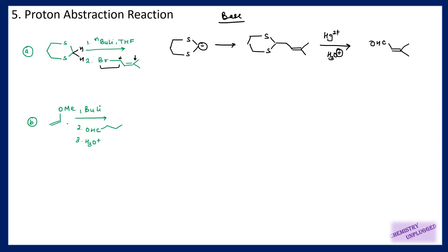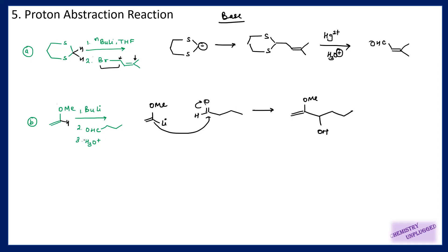Next we have an alpha-methoxy vinyl compound — this is vinyl with a methoxy group at the alpha position. We have one proton attached here, and this proton can be removed with butyllithium, giving us this organolithium compound. Then we are using an aldehyde — it will attack on this, this bond will shift.